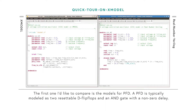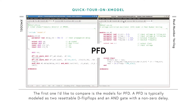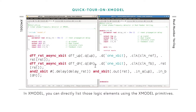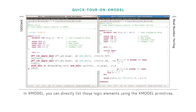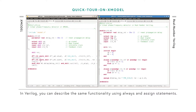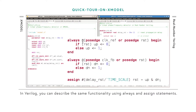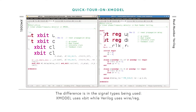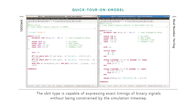The first model I'd like to compare is the PFD. PFD is typically modeled as two resettable D flip-flops and an AND gate with a non-zero delay. In X-Model, you can directly list these logic elements using the X-Model parameters. In Verilog, you can describe the same functionality using always or assign statements. X-Model uses X-Bit type, which is capable of expressing exact timings of binary signals without being constrained by the simulation timestamp.